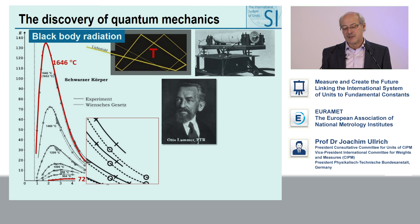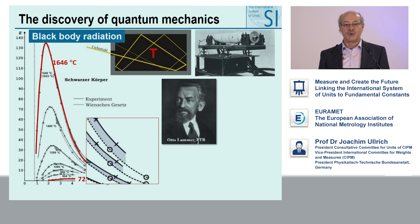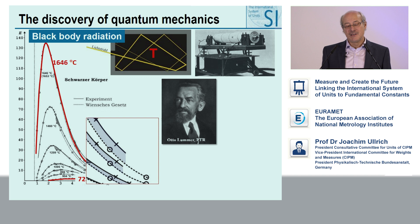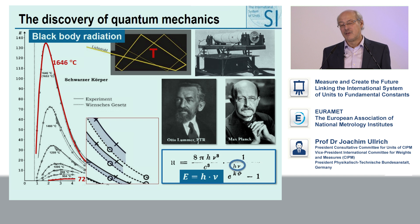The metrologists at those times — Otto Lummer, for instance, at the PTR — did these measurements extremely precisely. At very long wavelengths, they saw a discrepancy compared to the theoretical predictions they had at the time, namely Wien's Law, and they were confused. So they called Max Planck. Max Planck was in the curatorium of the Reichsanstalt at the time, and overnight, in an act of desperation as he said, he had to quantize the radiation energy. This led to his very famous formula on the radiation law, with the quantized energy of radiation — essentially of light.